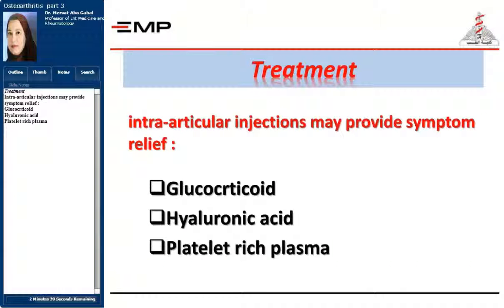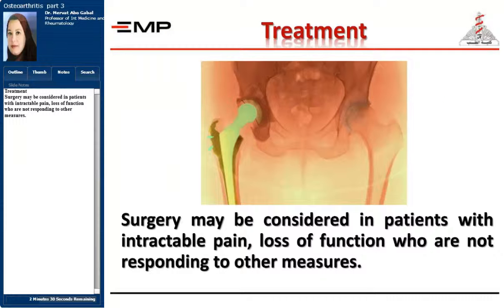Intraarticular injection may provide symptom relief by use of glucocorticoids, hyaluronic acid, and platelet-rich plasma. Surgery may be considered in patients with intractable pain and loss of function who are not responding to other measures.